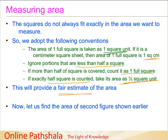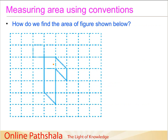So essentially, what we are going to do is find out the full square units, find out the half square units, ignore anything less than half, and count anything more than half as one. Now let us try to find out the area of this figure. First we look at the full square units — this is one, two, and three. So full squares are three.